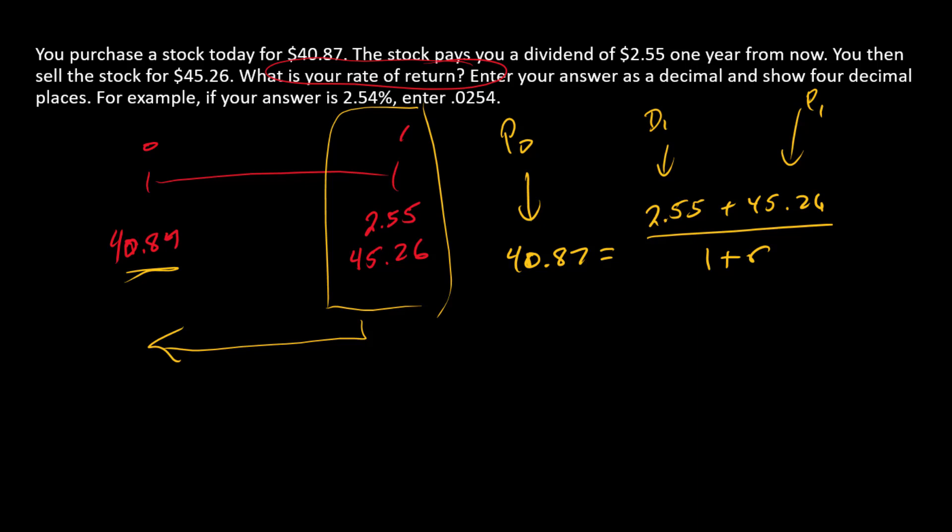So we can solve this for r. First of all, we'll put 1 + r over here, cross multiplying. And over on the right side we've got the sum of the two cash flows that happen at time one scaled by 40.87.